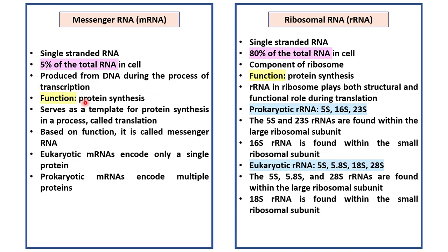It is involved in protein synthesis. mRNA serves as a template for protein synthesis in a process called translation. Based on the function, this type of RNA is called the messenger RNA. Eukaryotic mRNAs usually encode only a single protein, whereas many prokaryotic mRNAs encode multiple proteins.